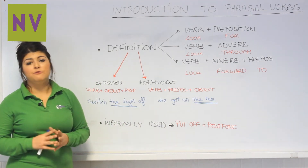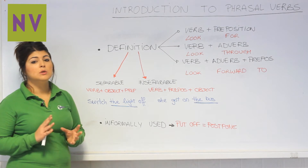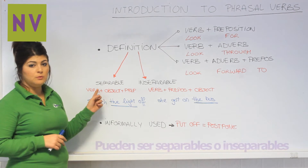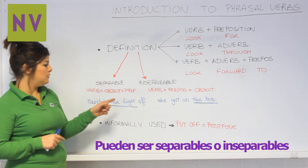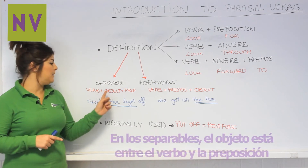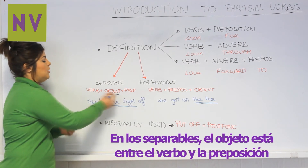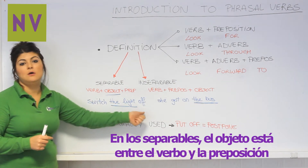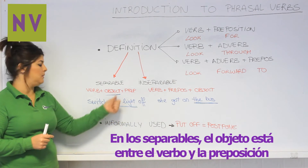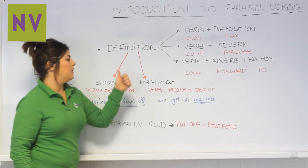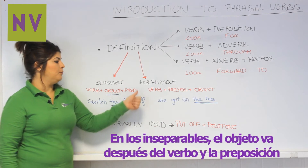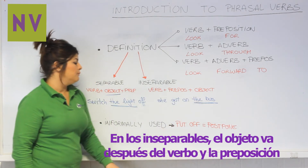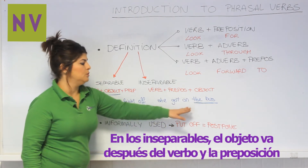The difficulty of phrasal verbs is also related to the two types we have in English: they could be separable or inseparable. Separable phrasal verbs have the object placed in the middle, between the verb and the preposition — like 'switch the light off.' The inseparable type has the object at the end, for example, 'she got on the bus.'